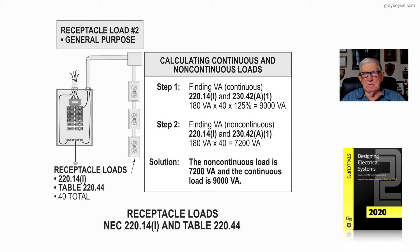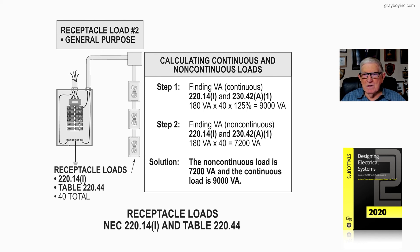If they were non-continuous, then we'd have 180 VA times 40, which gives us 7,200 volt-amps because they are used non-continuously. But we still haven't exceeded 10,000, so table 220.44 cannot be applied here. So the solution is: the non-continuous load of the receptacles is 7,200 VA, and the continuous load of the receptacles is 9,000 VA. That's exactly what illustration 23-9 is illustrating to the user of the NEC.